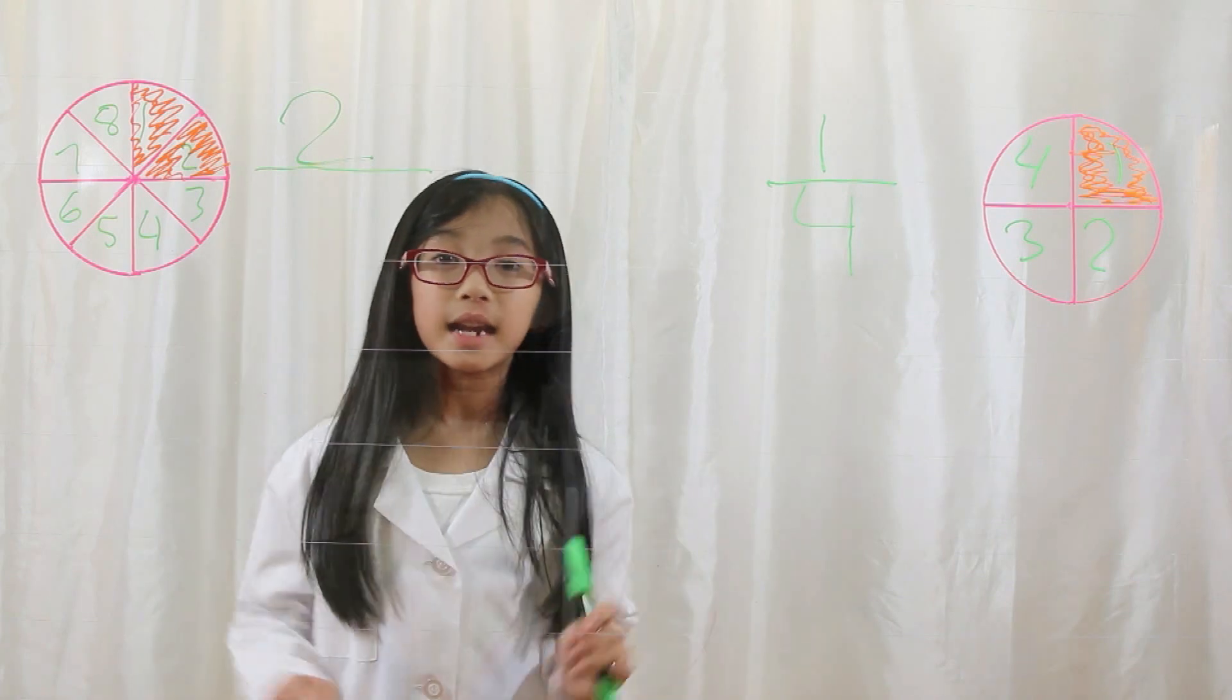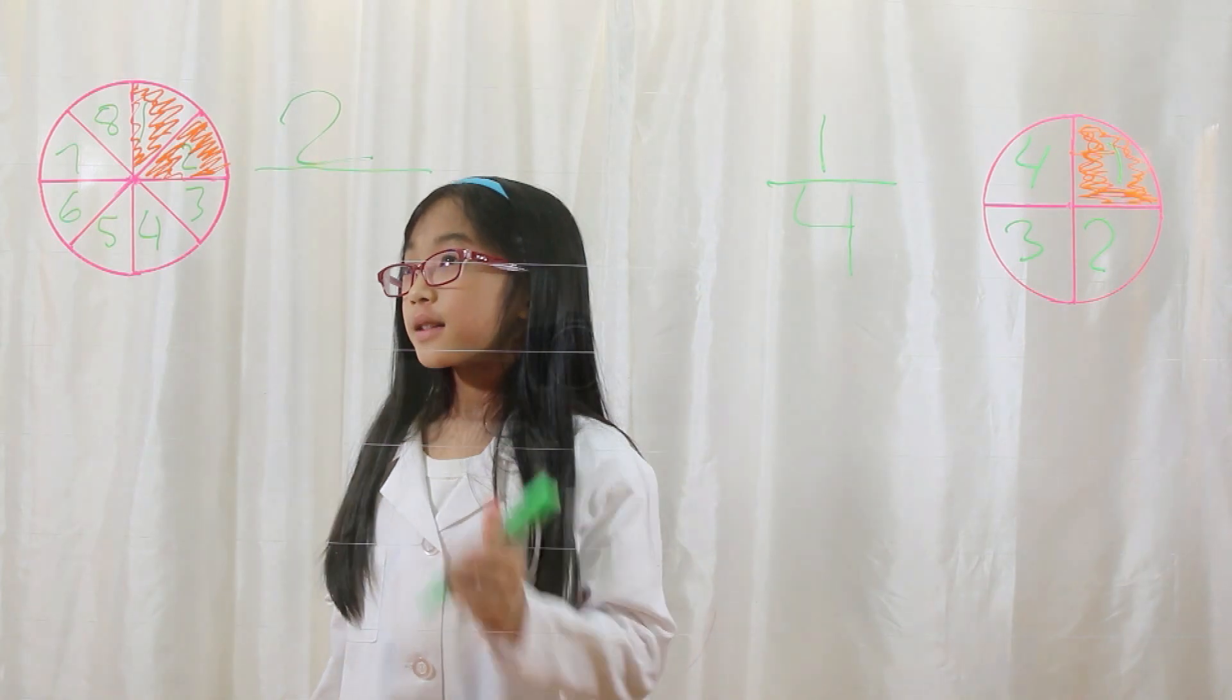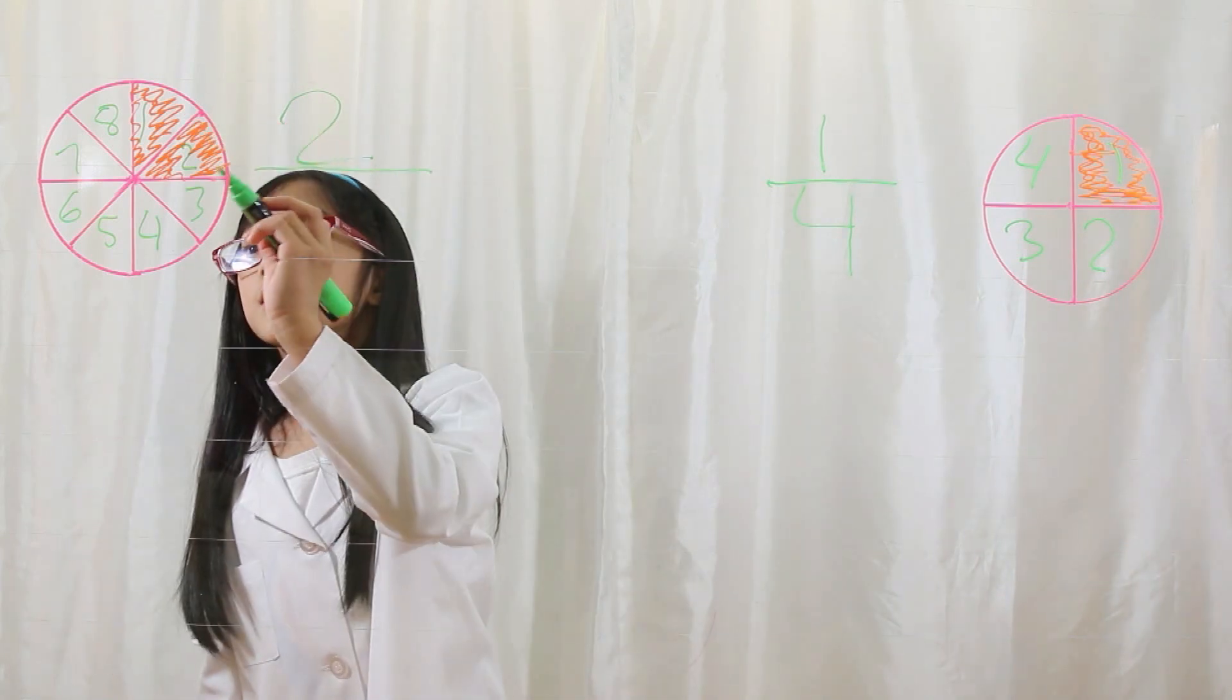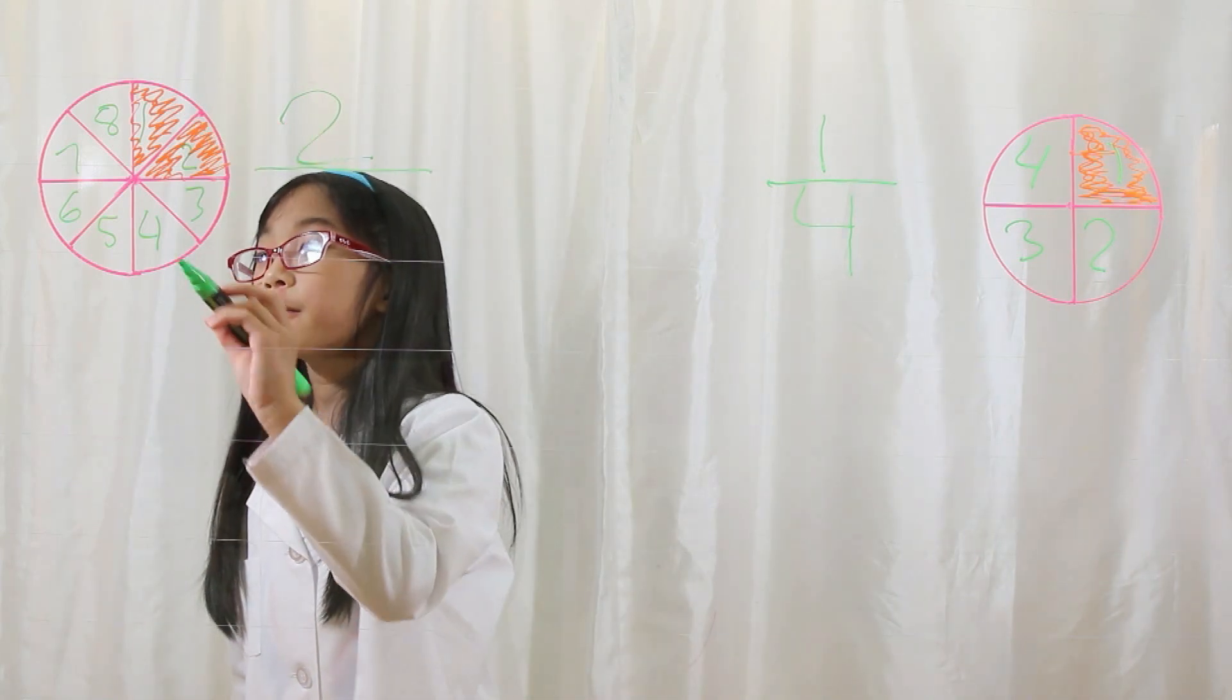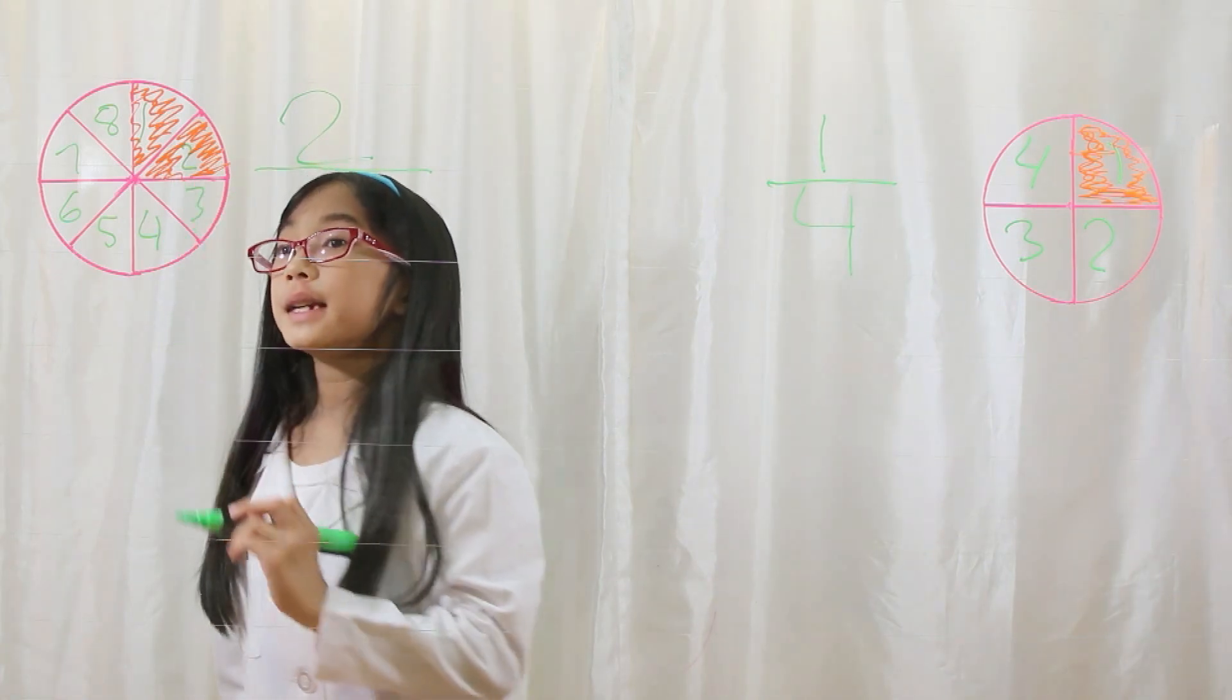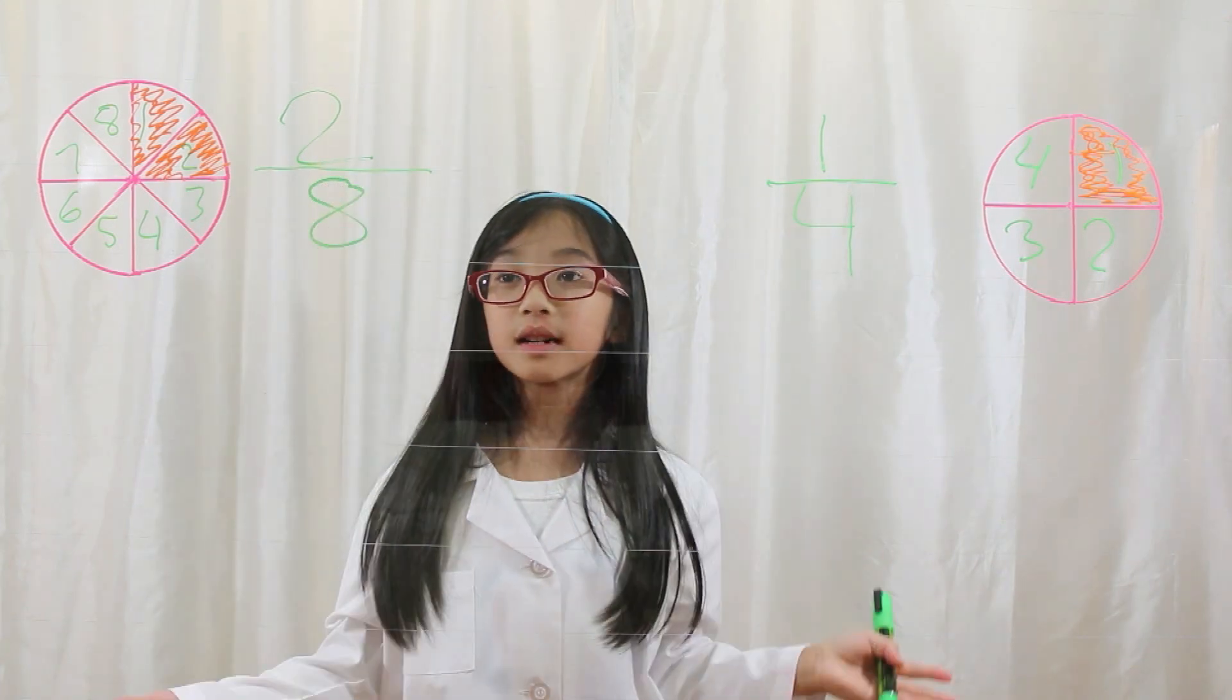What is our denominator? Well, what is a denominator? A denominator is how many parts there are in a total whole. So there are one, two, three, four, five, six, seven, eight pieces. So eight is our denominator. Now what do you know is special?